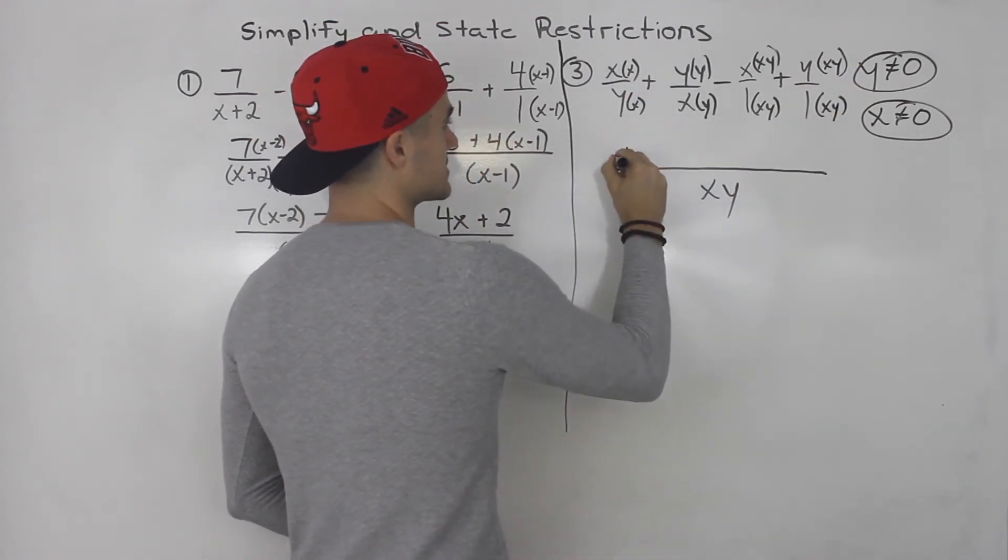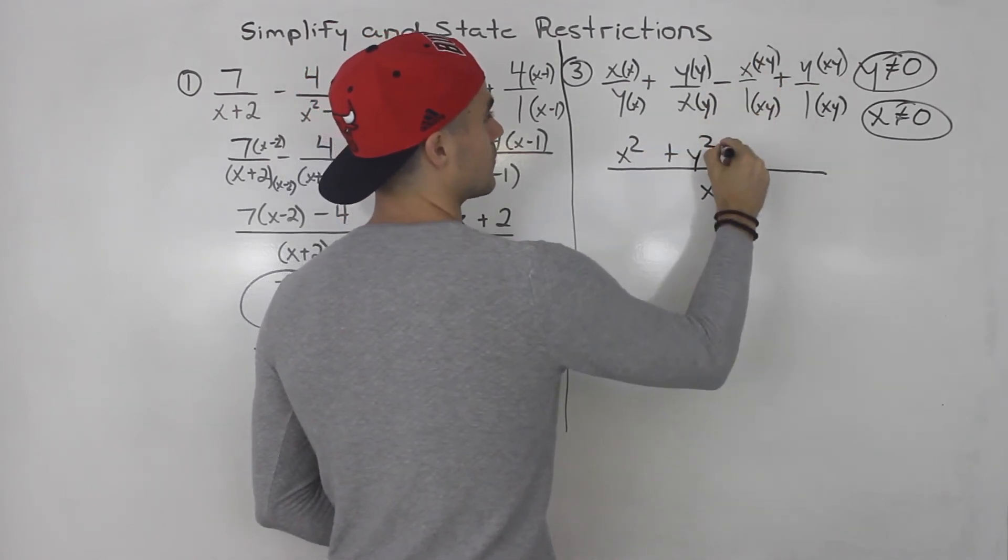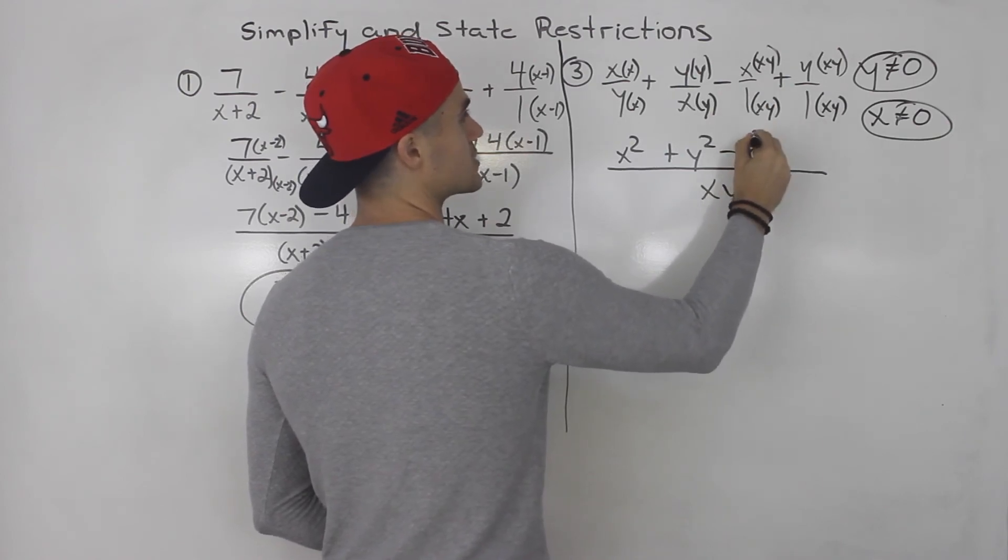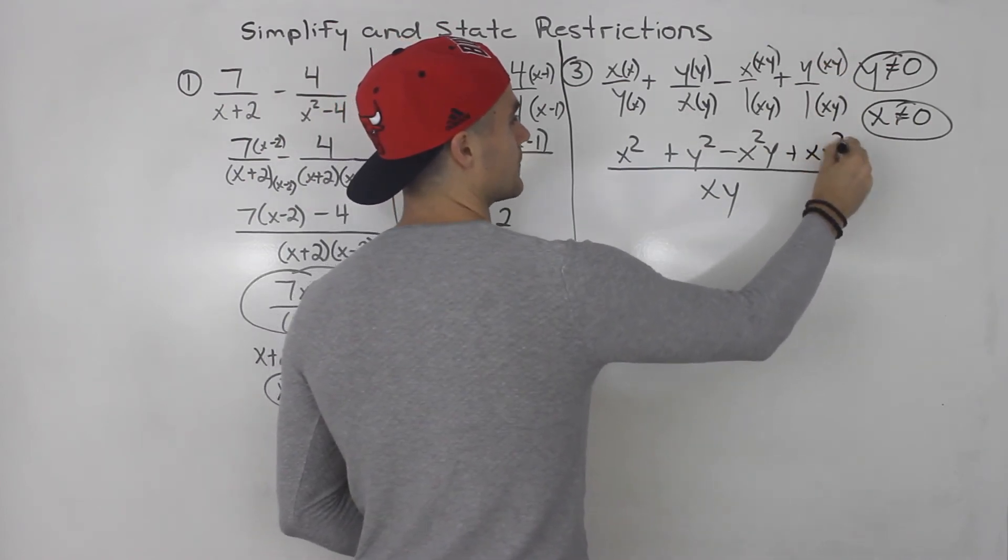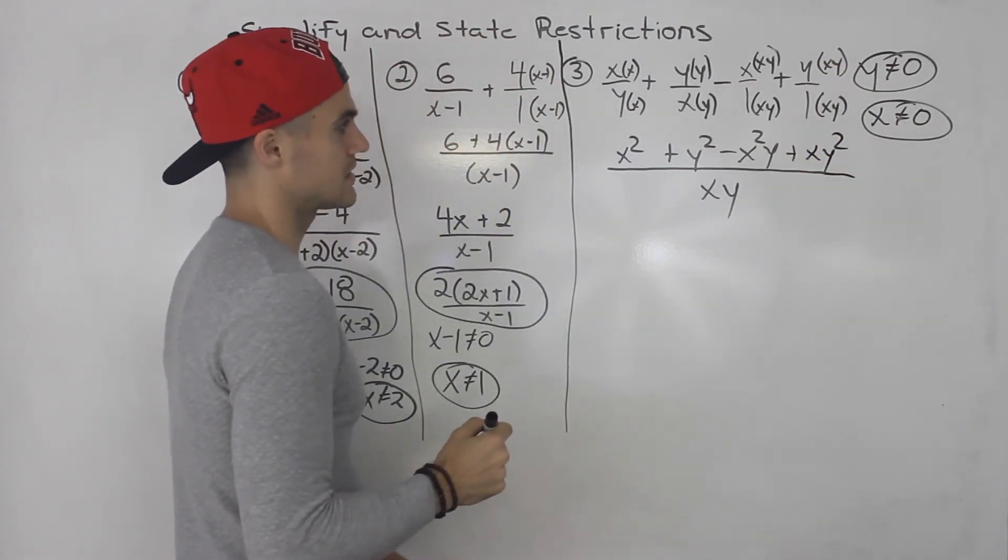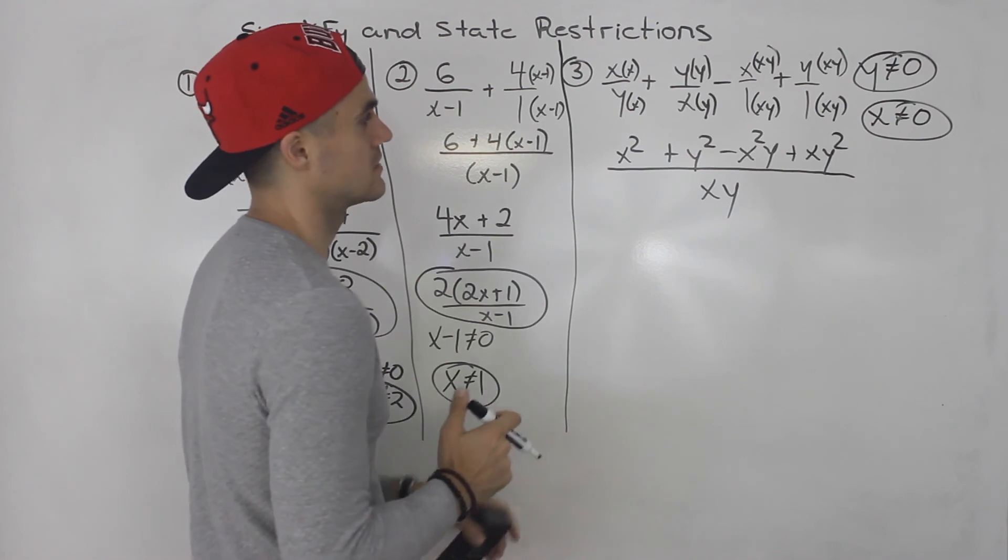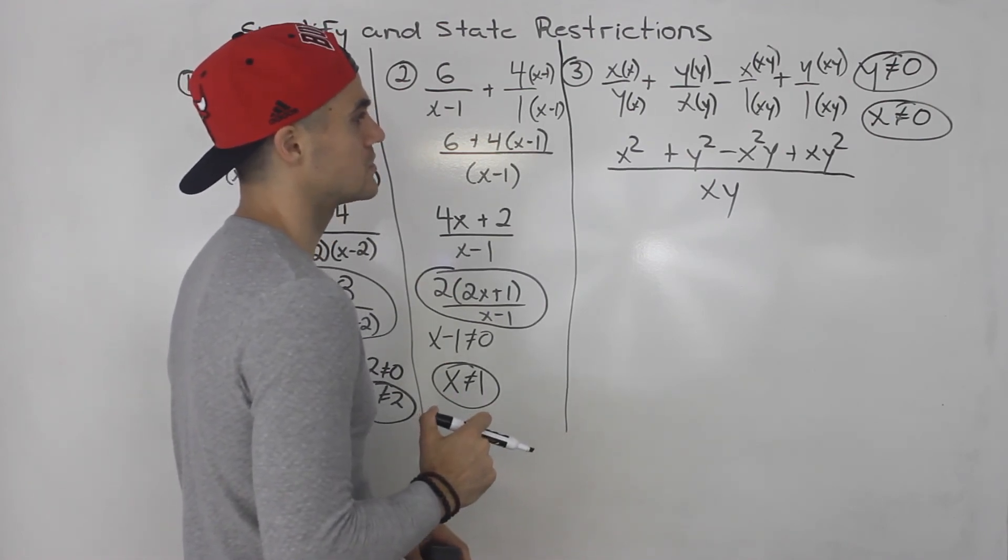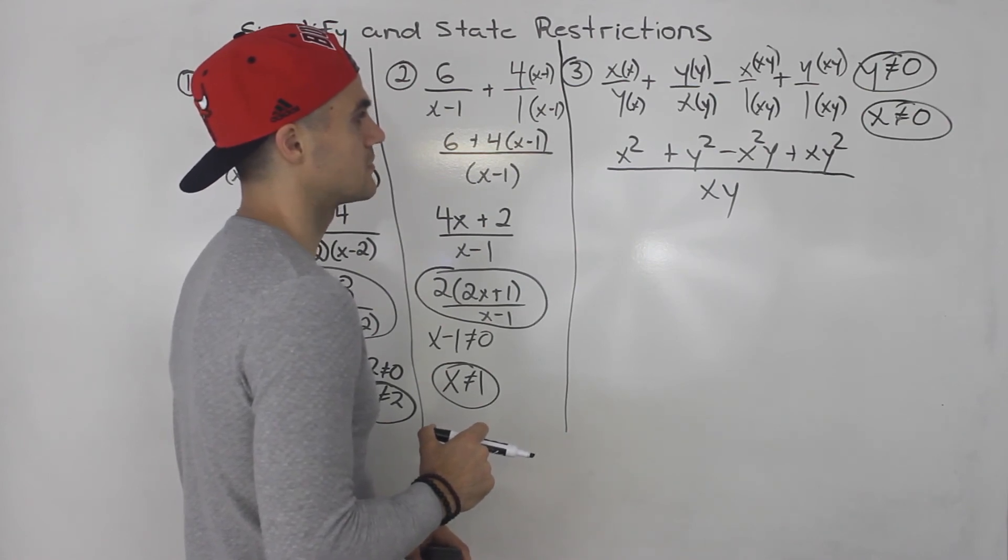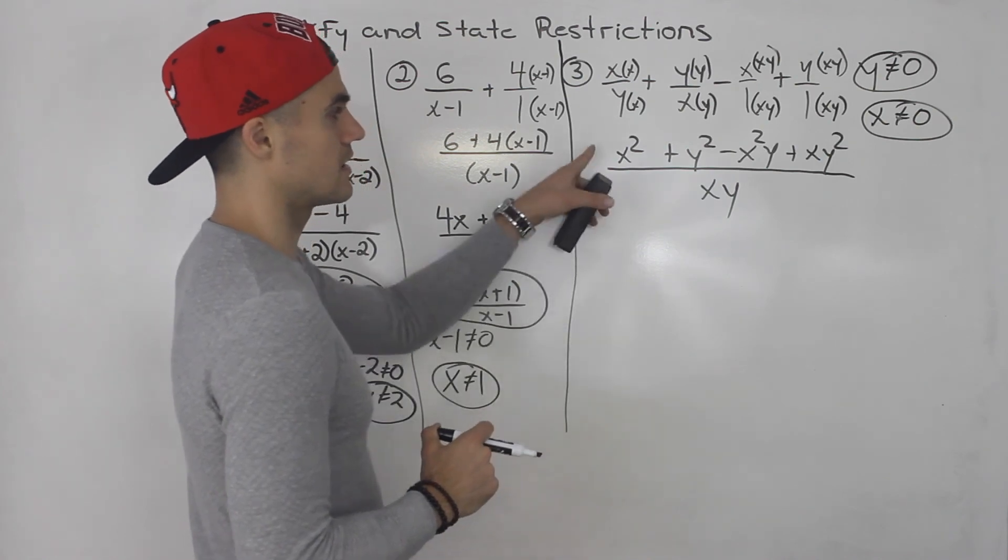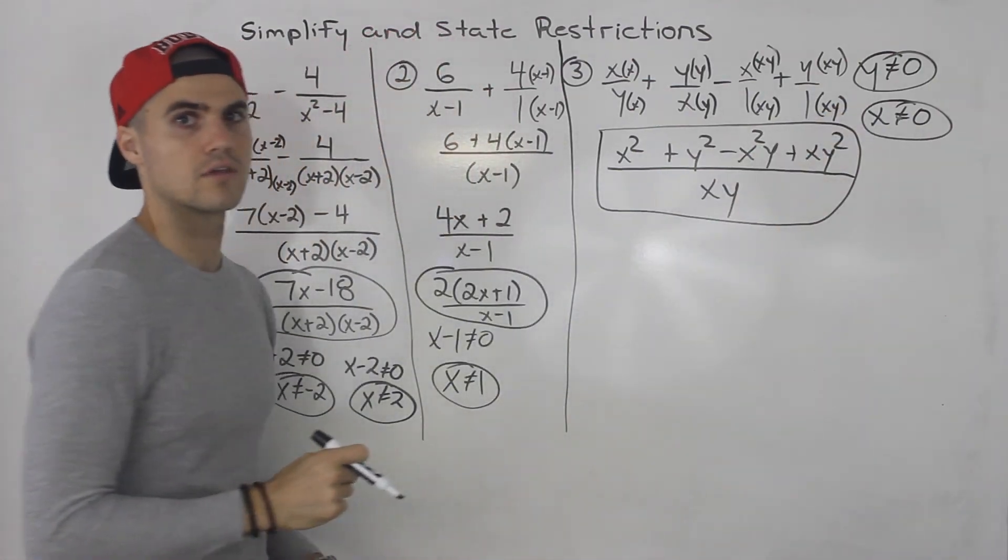So x times x, that's x squared. This would be y squared. This here would be minus x times xy is x squared y. And then plus y times xy is xy squared. And notice here, this can't really simplify any further. I don't think you could factor that numerator any further. Let me just double check, maybe by grouping. No. Doesn't seem like you can. So this is your final answer. That's what it simplifies to. And then those two are the restrictions.